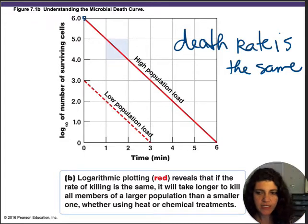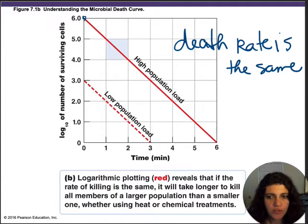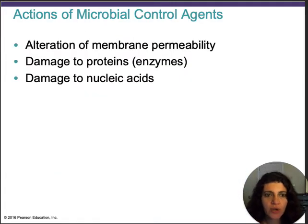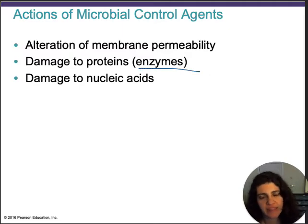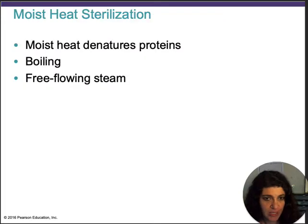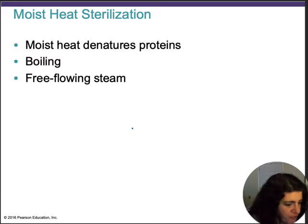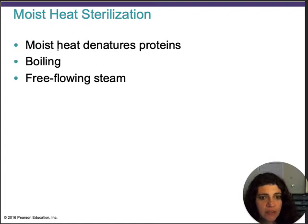Let's start talking about the agents. Most of them kill microbes by altering the membrane permeability, or damaging proteins or nucleic acids. Usually the proteins they damage are enzymes, and then the metabolism cannot function inside the microbe. For physical methods we have heat, filtration, and radiation. Heat usually denatures proteins.